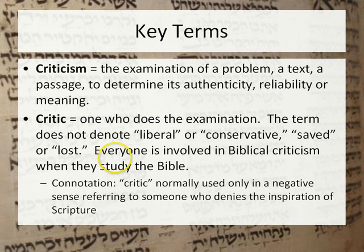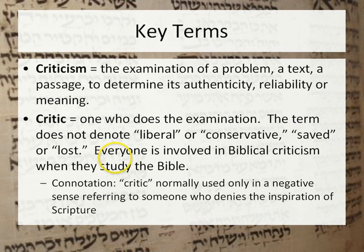Criticism is not inherently negative in its connotation. A critic is one who does the examination. The term doesn't denote liberal or conservative, although most of the time 'critic' is used only in the context of a liberal by a conservative — though the liberals did call themselves liberals when they became liberals at the beginning of the 20th century.